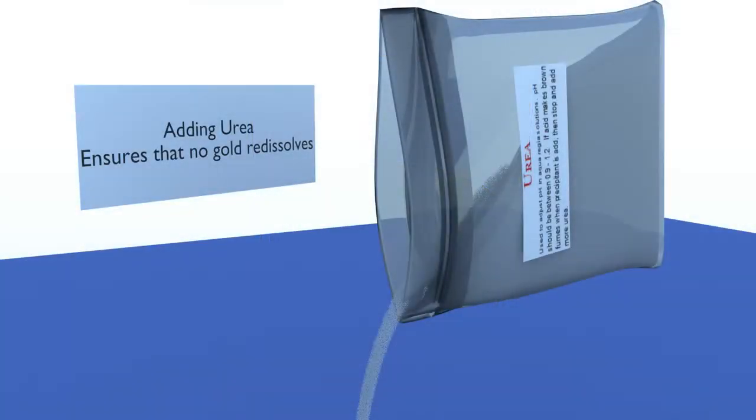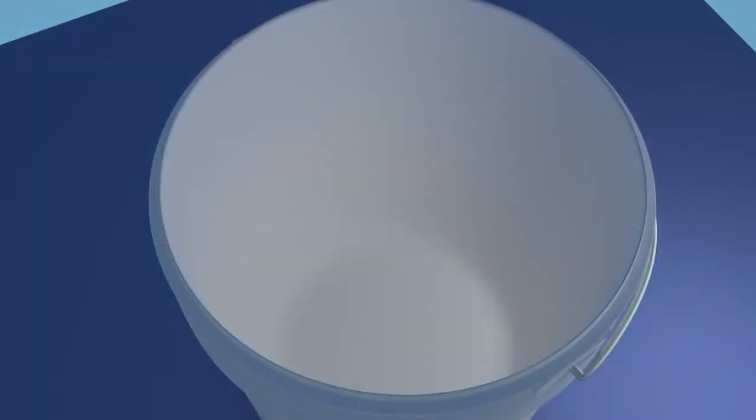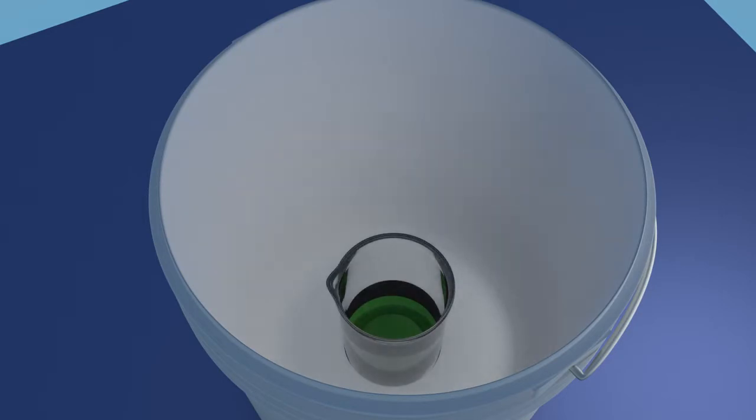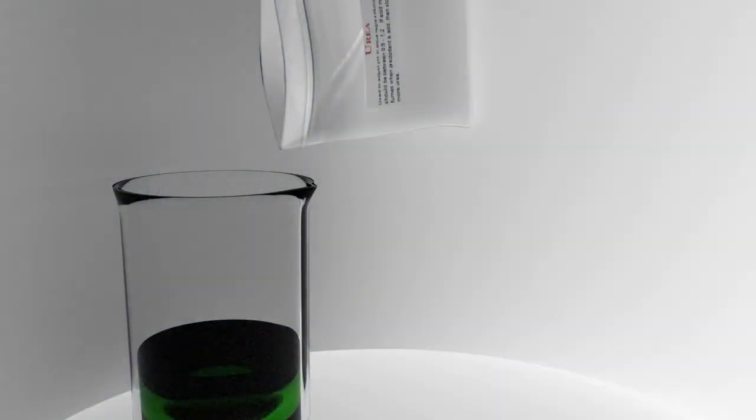Adding urea: free nitrogen ions can cause some gold to redissolve after it is precipitated out of solution, resulting in gold losses. No worries, adding urea neutralizes all these ions ensuring that the gold does not redissolve. Place your beaker in a clean white plastic bucket. Though overflows are not common, the bucket will contain the solution if an overflow occurs. Add urea to your solution.